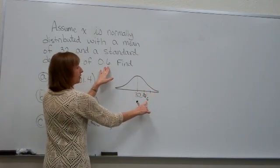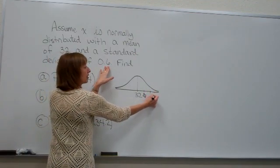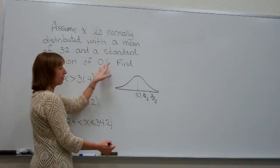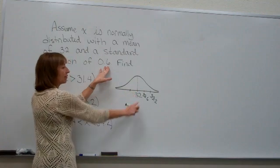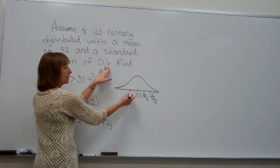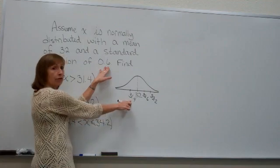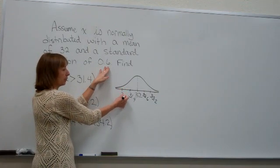If I added another standard deviation, I would have 32.6 plus 0.6 would be 33.2 for your second standard deviation. Now, if I subtract 0.6, I have 32 subtract 0.6 is 31.4. And 31.4 subtract 0.6 is 30.8.